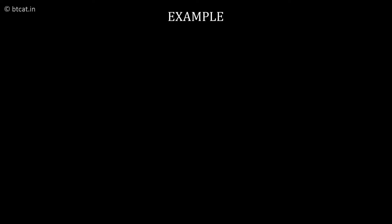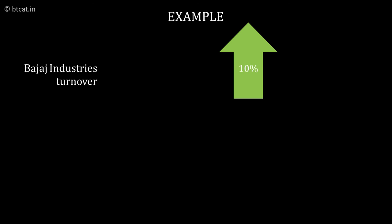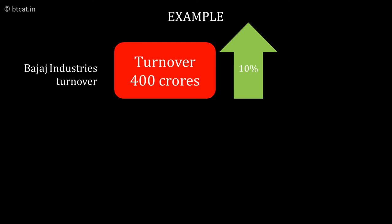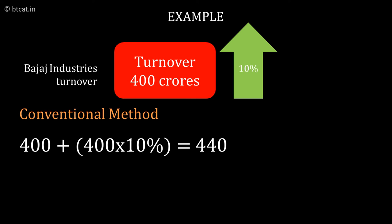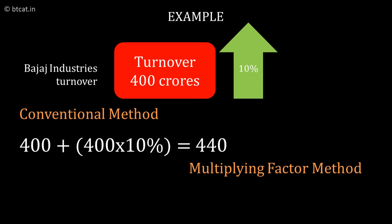The turnover of Bajaj Industries increases by 10%. Earlier it was 400 crores. Can you tell the final turnover? We can easily find out 400 plus 10% of 400, which is 40, and therefore the answer will be 440 crores. What the multiplying factor does is allow us to do this as 400 into 1.1, which also gives us 440.